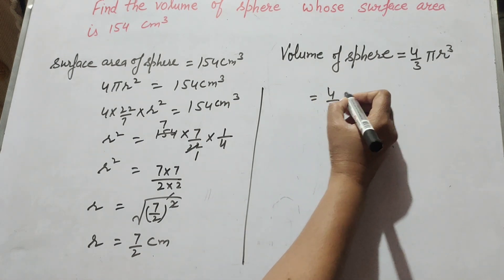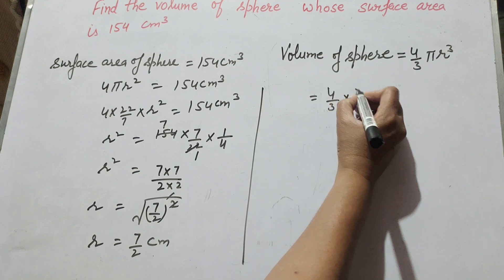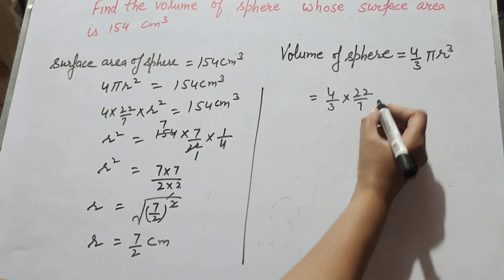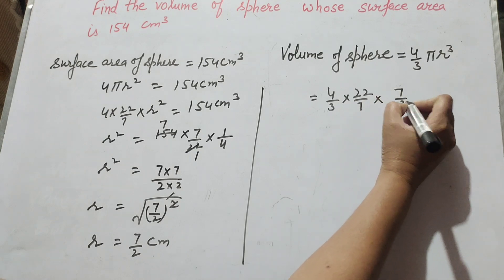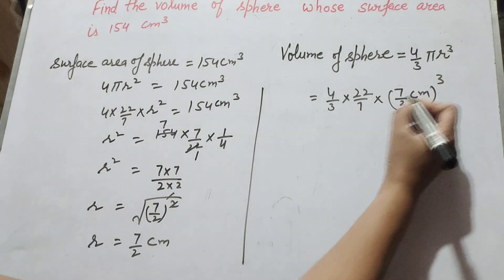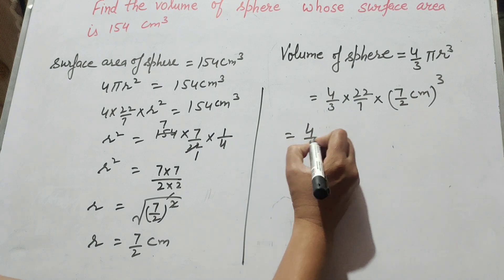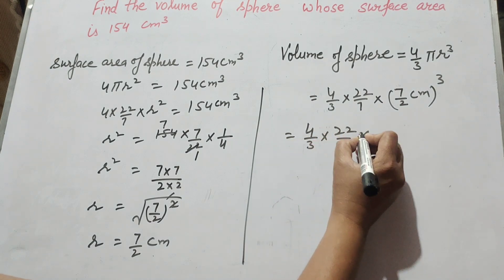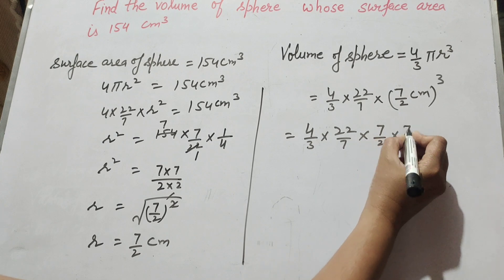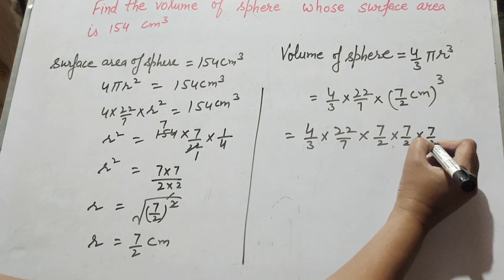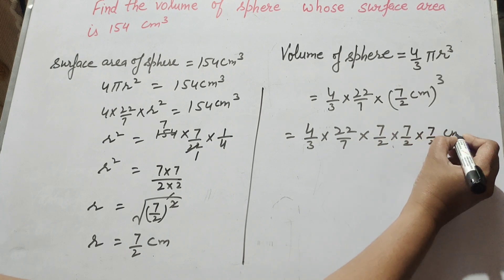The volume of the sphere is equal to 4 over 3 times pi, whose value is 22 over 7, times r cube, where r is 7 over 2 centimeter. So it is equal to 4 over 3 times 22 over 7 times 7 over 2 times 7 over 2 times 7 over 2, centimeter cube.